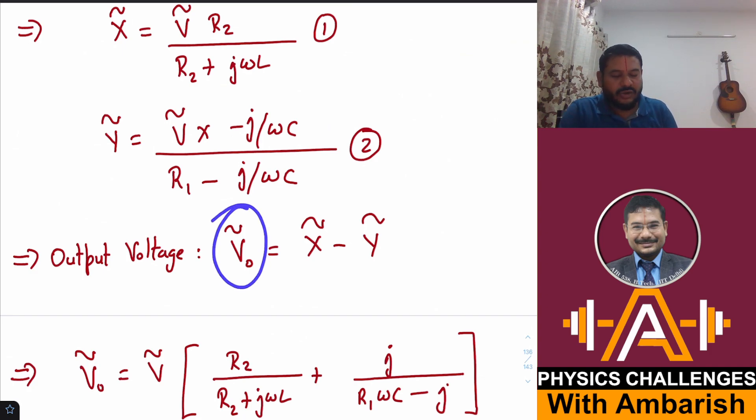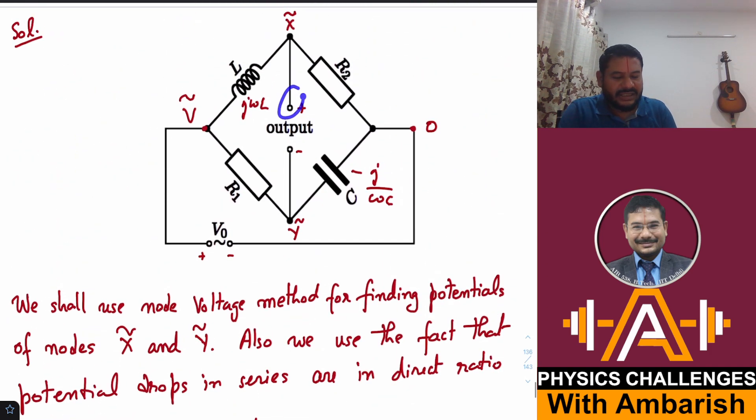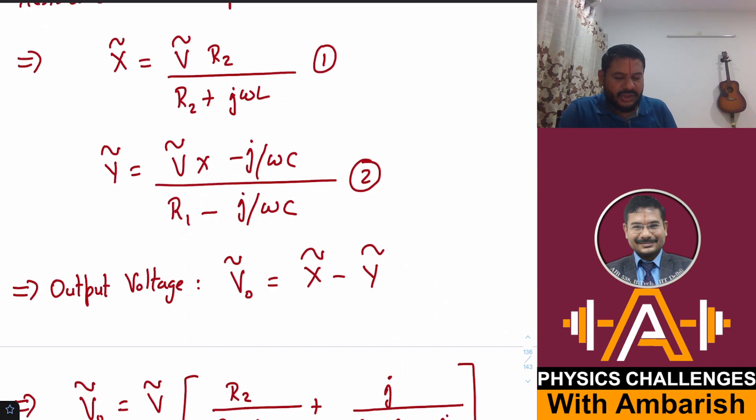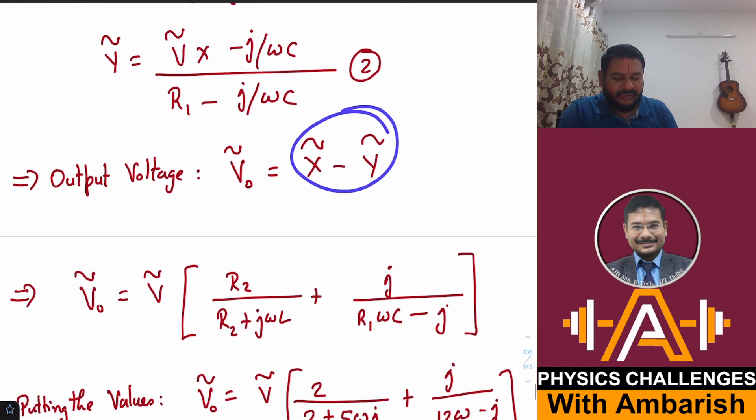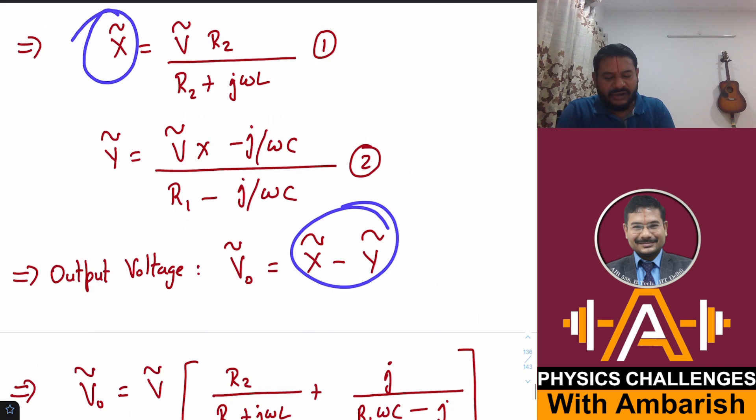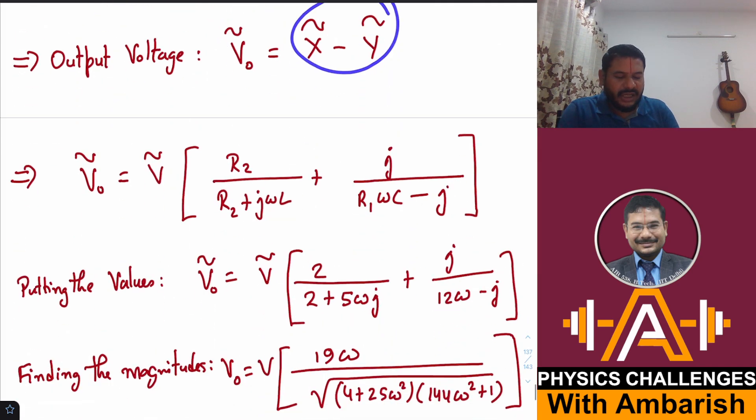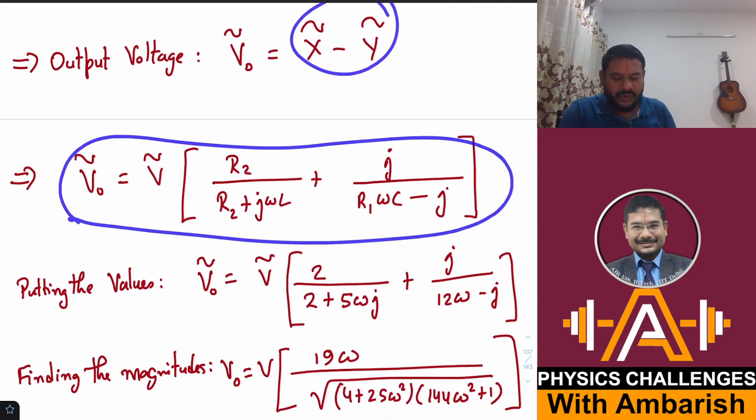What is our output voltage? Output voltage is X tilde minus Y tilde. Here it is Y tilde, here it is X tilde, and we need to subtract the two. So we can do that and if you simplify, you have X tilde, you have Y tilde, and you simplify. This is what you get for output voltage.